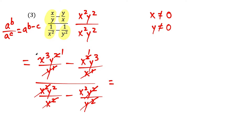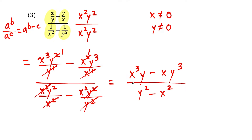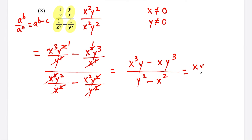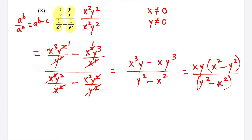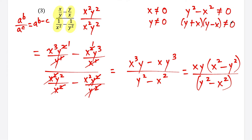Cleaning this up, we have x cubed y minus x y cubed on top, all over y squared minus x squared on the bottom. We can factor out a greatest common factor of x times y on top, leaving x squared minus y squared. The new denominator y squared minus x squared cannot equal zero, so we factor it as y plus x times y minus x, which means y is not allowed to equal negative x, and y is not allowed to equal x.